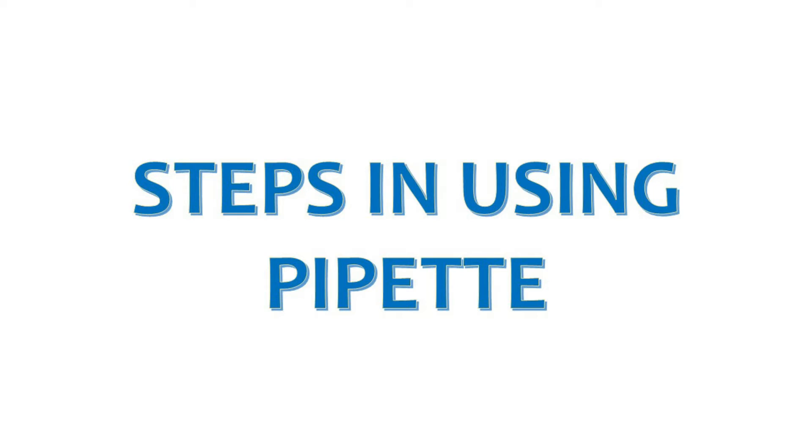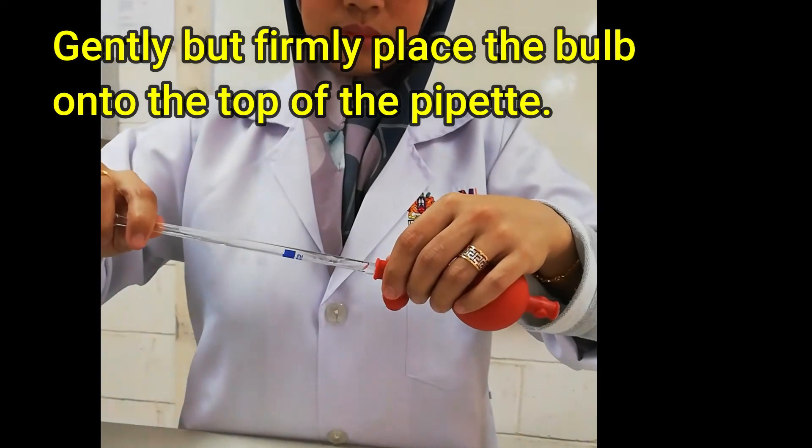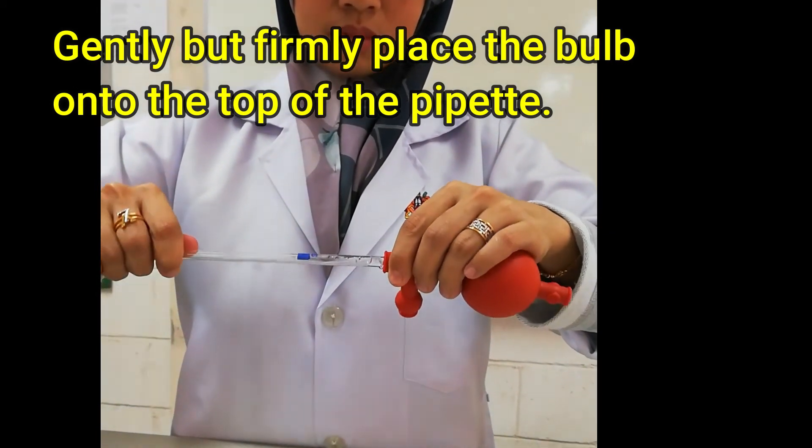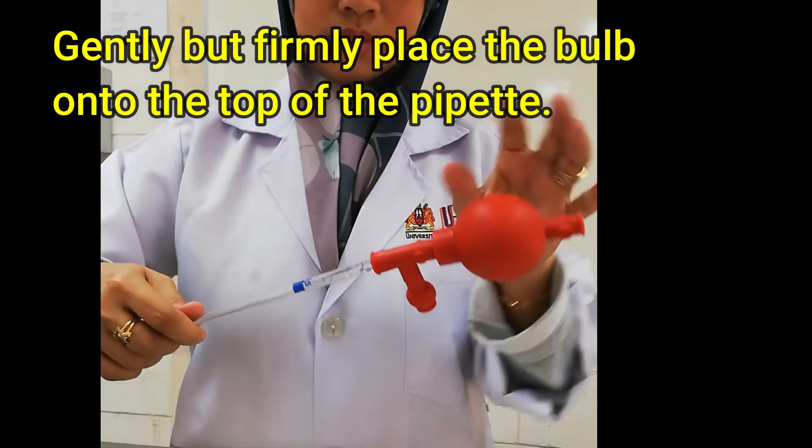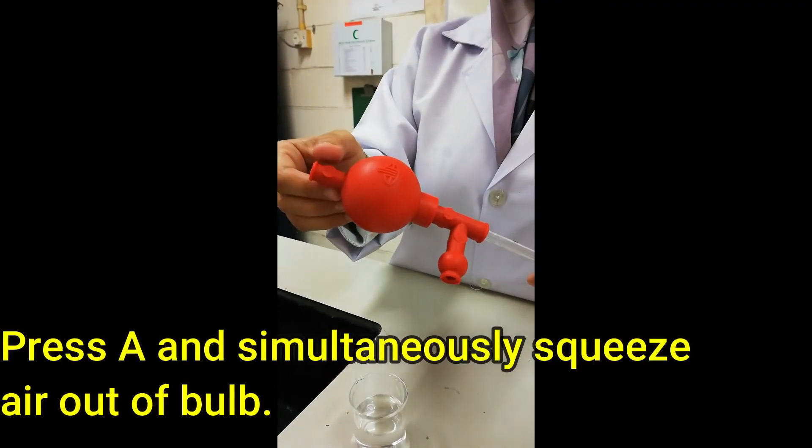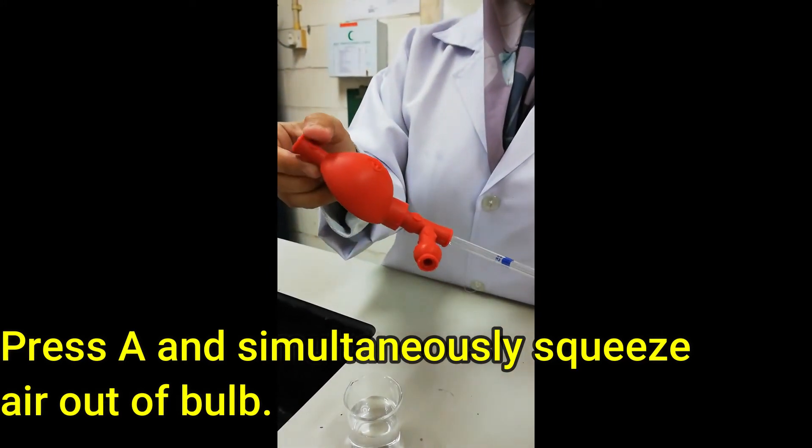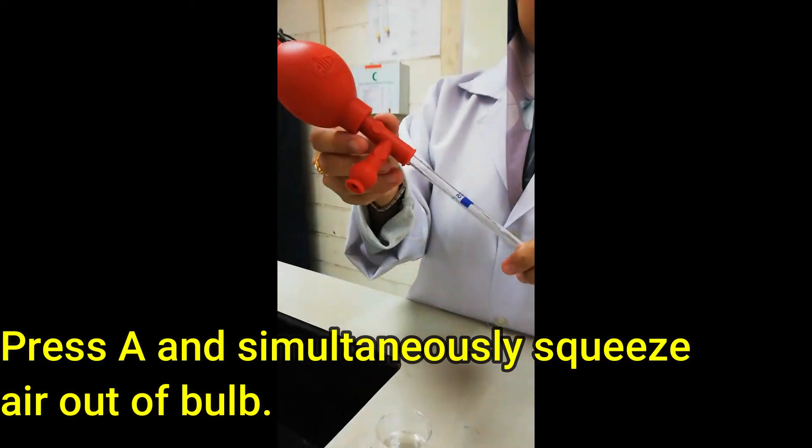Steps in using a pipette. Step 1: Rinse the pipette with distilled water. Gently but firmly, place the bulb onto the top of the pipette. Press A and squeeze the bulb simultaneously to release the air out of the bulb.